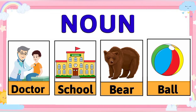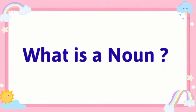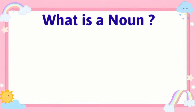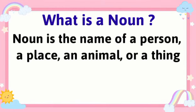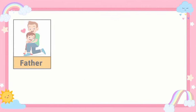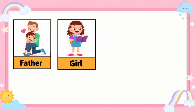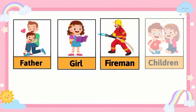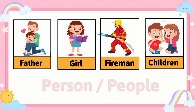In this video we'll learn about what is a noun. A noun is the name of a person, a place, an animal, or a thing. We also call them naming words. For example: father, girl, fireman, children, and many more.